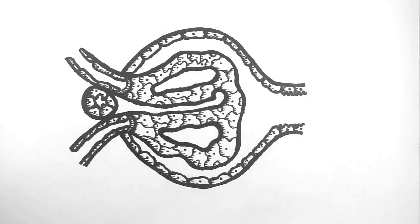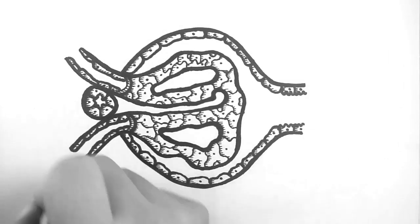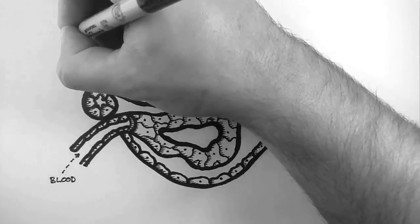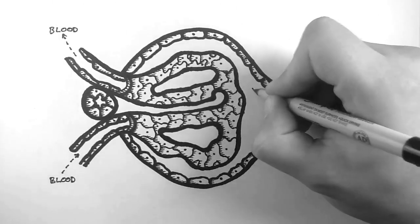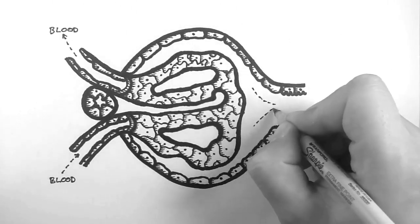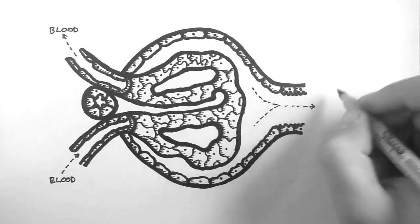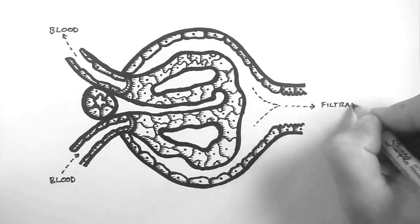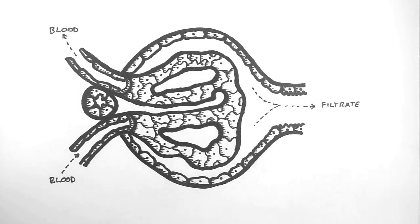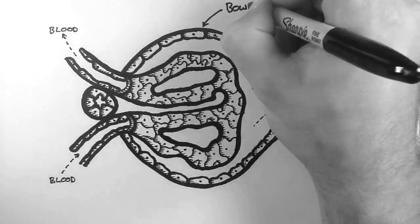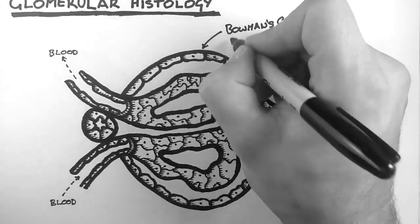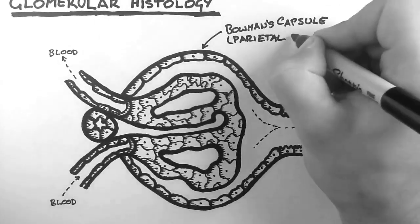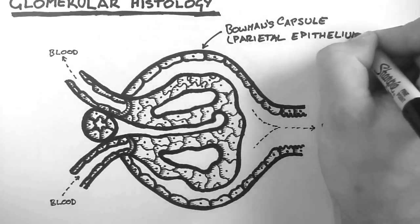The blood flows through the glomerulus via these arterioles, entering through here and exiting through here. The blood is filtered in the capillaries inside the glomerulus, and the filtrate flows out here. The glomerulus is surrounded by the Bowman's capsule, which is made of epithelial cells, which we call parietal epithelium.